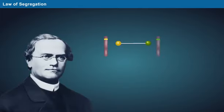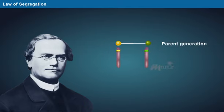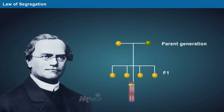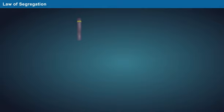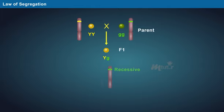Law of segregation. Mendel explained the law of segregation with the transfer of alleles from the parent to the F1 generation and F2 generation. An allele for a particular trait is transferred from each parent to the offspring wherein the type of allele to get transferred is decided by chance.